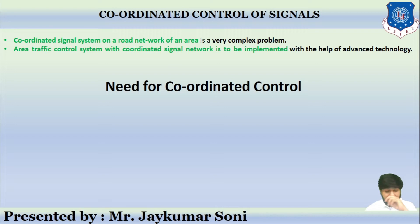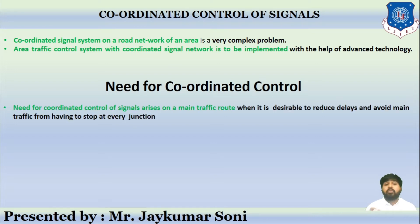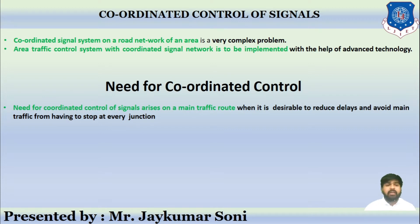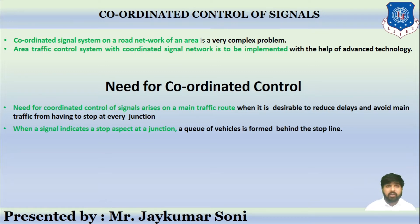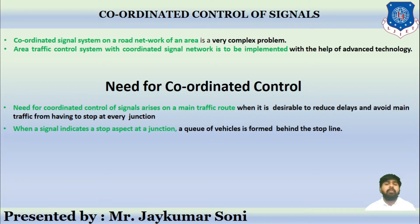Let us learn the need for a coordinated control system — why it is required. The need for coordinated control of signals arises on main traffic routes where it is desirable to reduce delays and avoid main traffic from having to stop at every junction. When a signal indicates a stop at a junction, a queue of vehicles is formed behind the stop line.